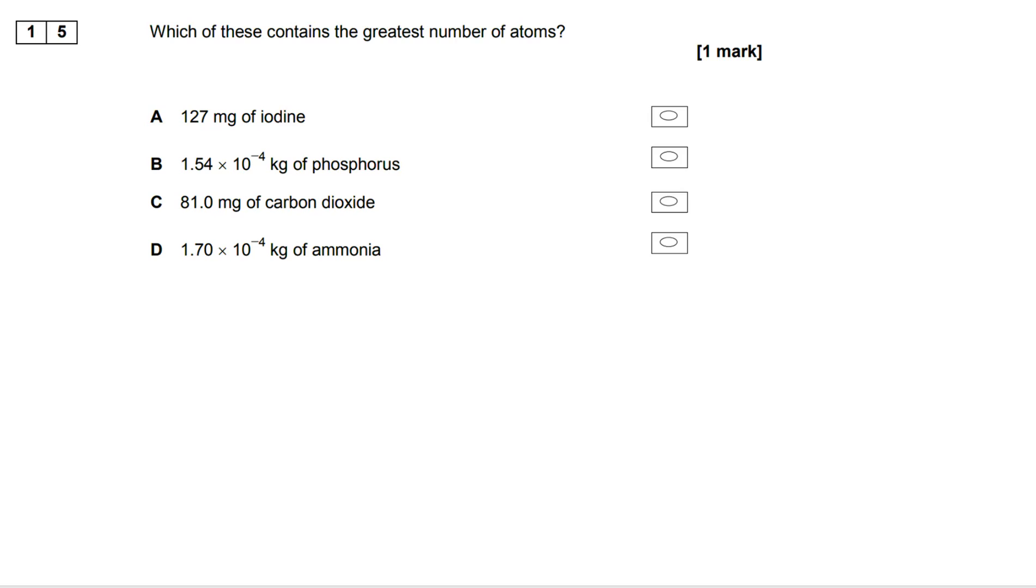So we start off with A and you'll notice that I'm working out moles of atoms. So we go through first of all, remembering that iodine is diatomic, so we work out our number of moles of I2 and we get 5 by 10 to the minus 4, but each iodine contains two atoms, so we double it and we get 10 by 10 to the minus 4 moles of atoms.